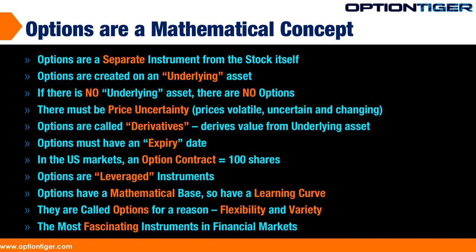Options are a separate instrument from the stock itself. The stock or asset is called the underlying asset. Think of the olive farmer — the olive, or the price of olives for that season, is the underlying asset. But the contract created between the speculator and the farmers is an options contract, which is separate from the underlying asset. In this case it was the olive harvest, but it could be stocks, bonds, foreign exchange, or anything. Options require an underlying asset — if there's no underlying asset, there cannot be any options.